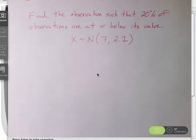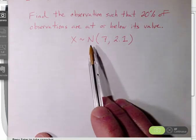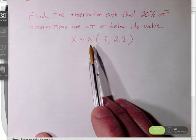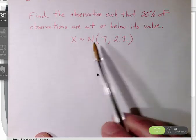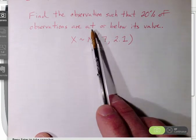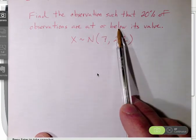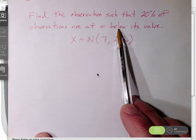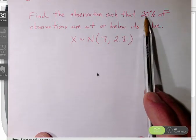Assuming that we are working with normally distributed data, I would like to find the observation such that 20% of observations are at or below its value. So I'm looking for a specific value within the distribution, a specific x value, and I'm given the percentile.